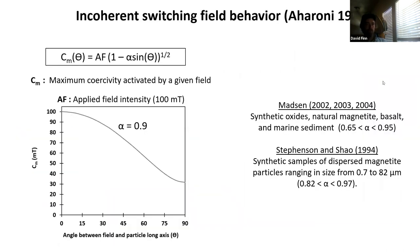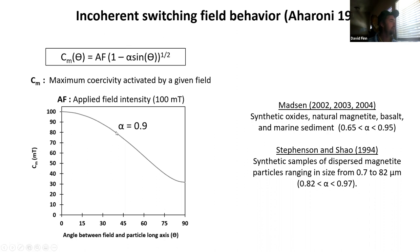In the box here I have rearranged the switching field equation from Aharoni in 1986 to plot a curve showing the maximum particle coercivity activated as a function of angle between the applied field direction and the particle long axis. Aharoni's equation includes an alpha parameter which experimentally was found to be about 0.9 for fine-grain magnetite. For the rest of the talk I'm just going to use 0.9 in modeling.